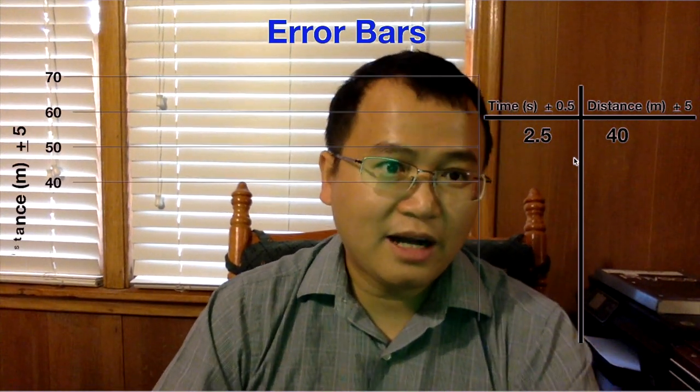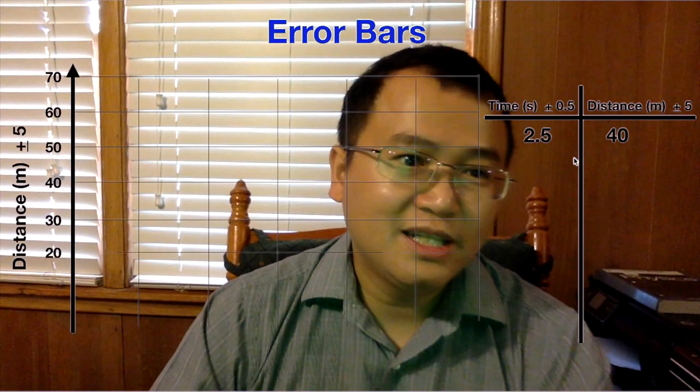To plot that we create a graph. On the y-axis I put distance in meters, and on the x-axis I'm going to put time in seconds. You notice the time has uncertainty, so let's put a point right there.